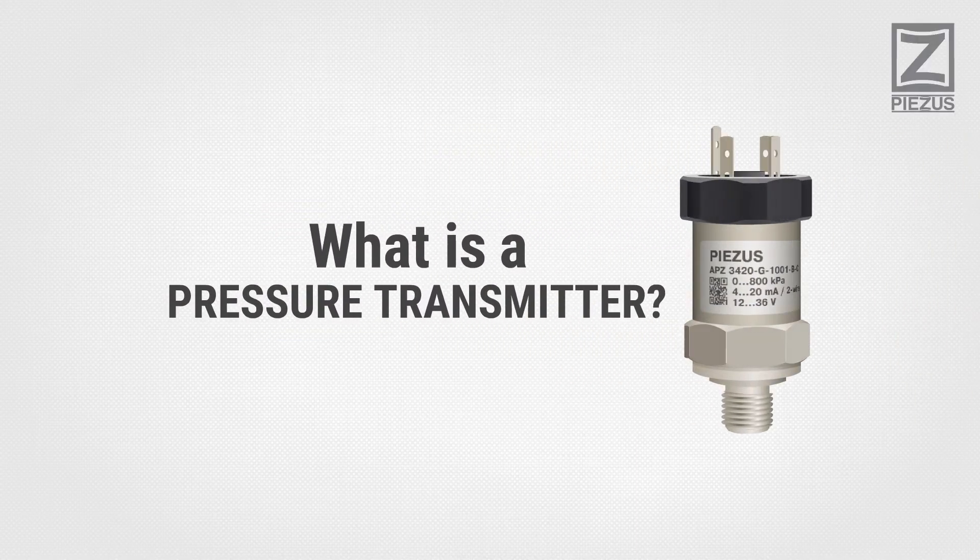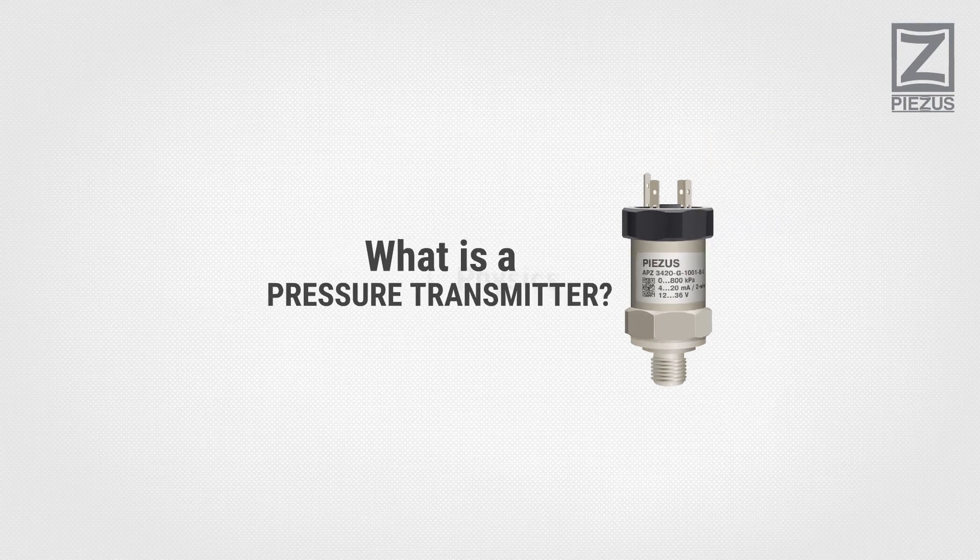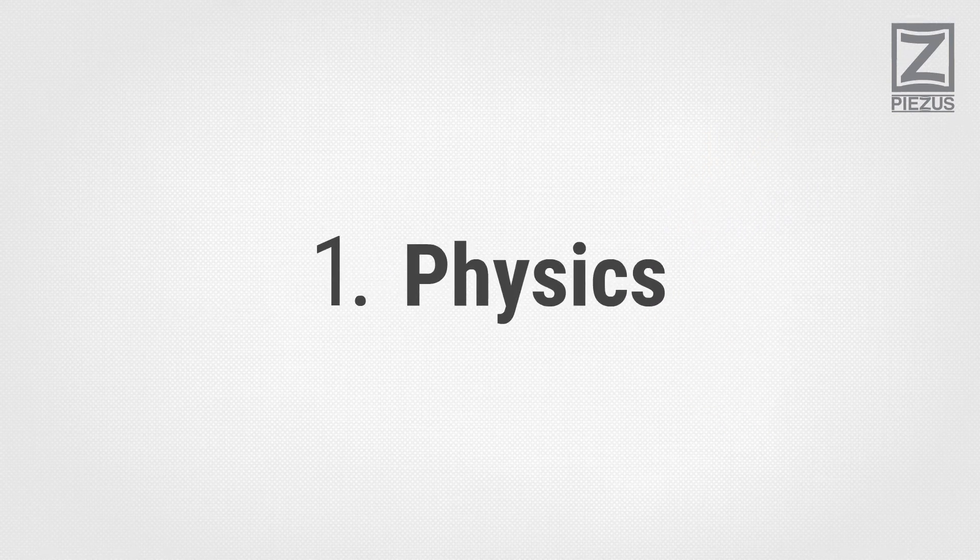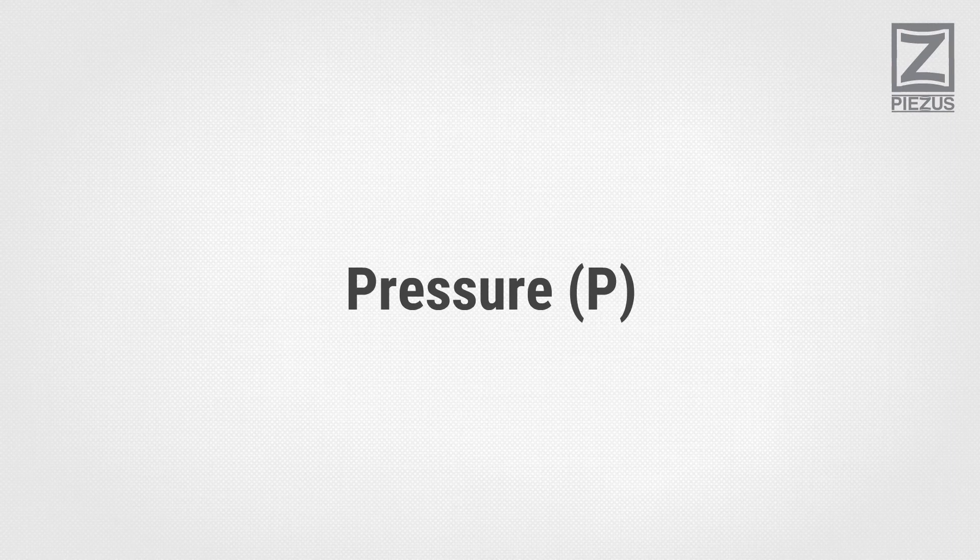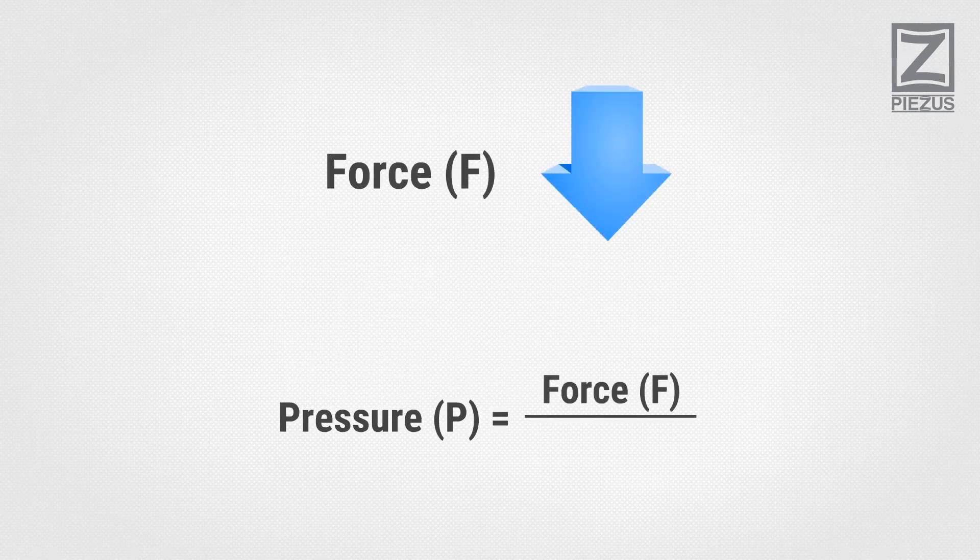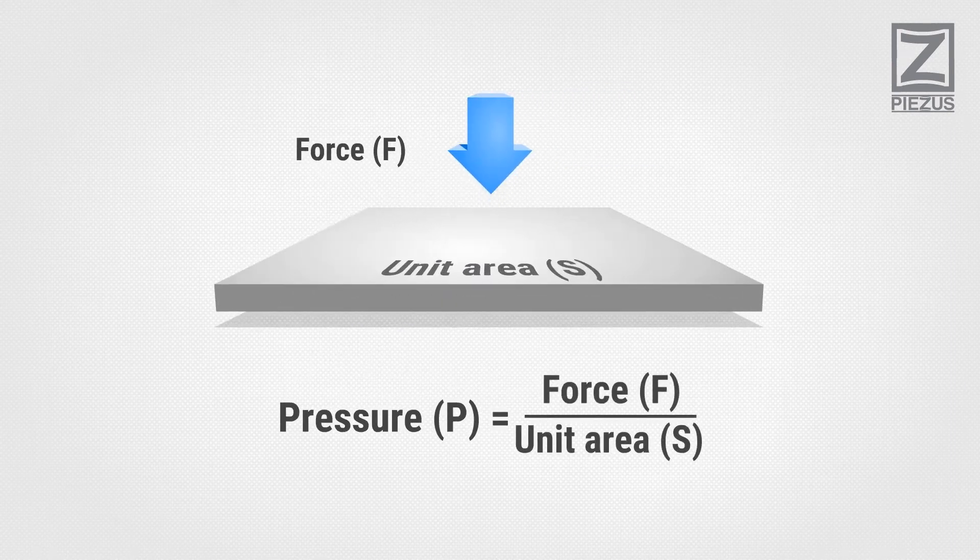What is a pressure transmitter? Physics: Pressure (P) is defined as the amount of force (F) acting per unit area (S).